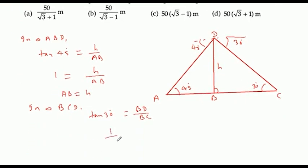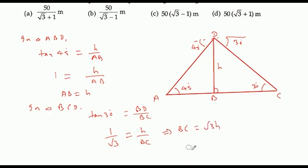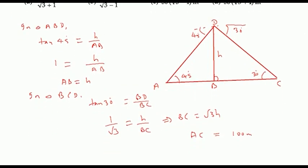1 by root 3 times H, and Y. BC equals root 3 H. So this is not the height of the town — we have AC. The ships are 100 meters apart, so AC equals AB plus BC equals 100 meters.